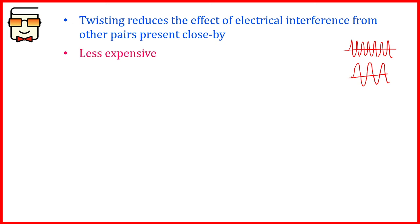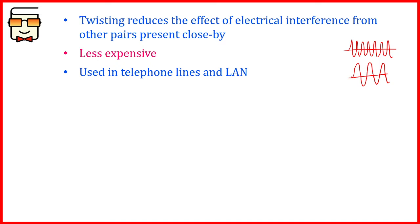The biggest advantage of twisted pair cables is that they are the least expensive compared to fiber optics and coaxial cables. Twisted pair cables are generally used in telephone lines — for physical landline phones and for providing internet connectivity to homes.